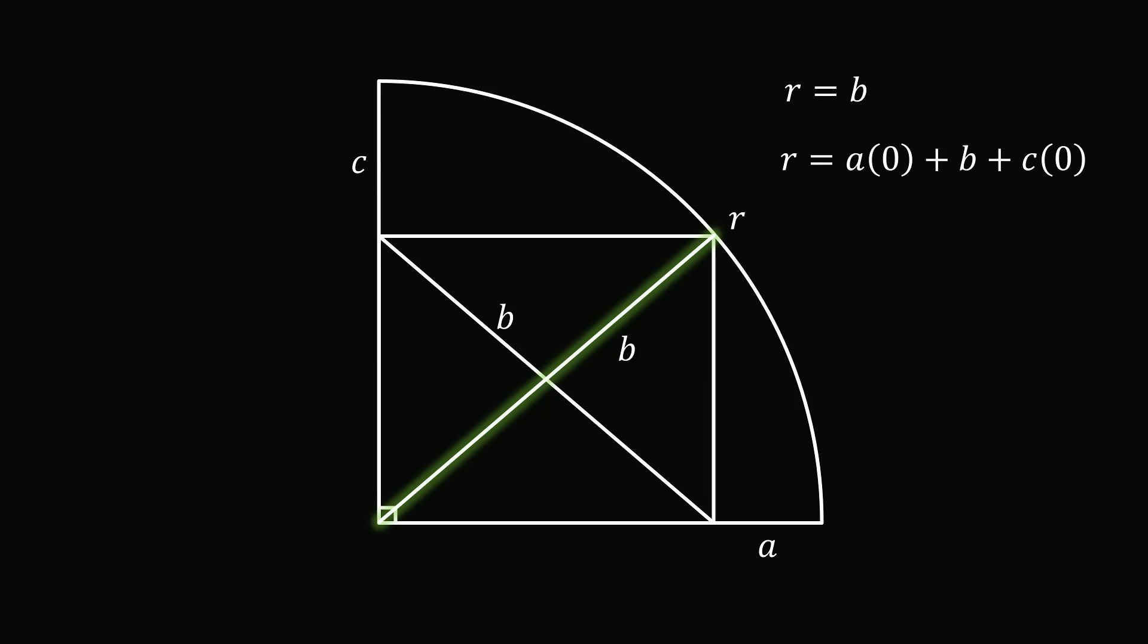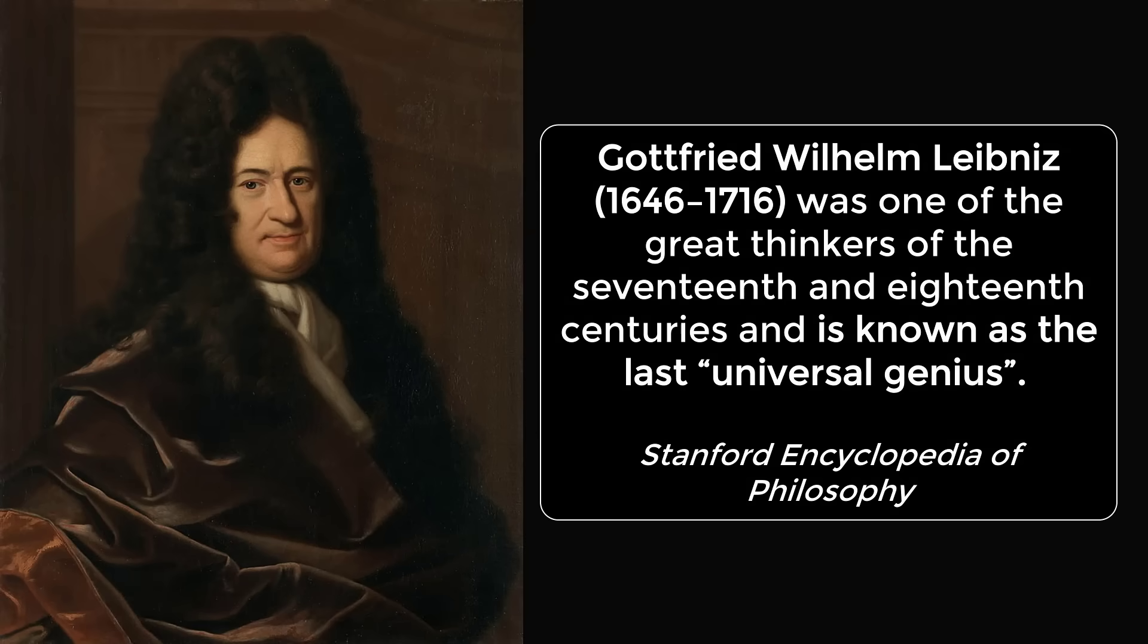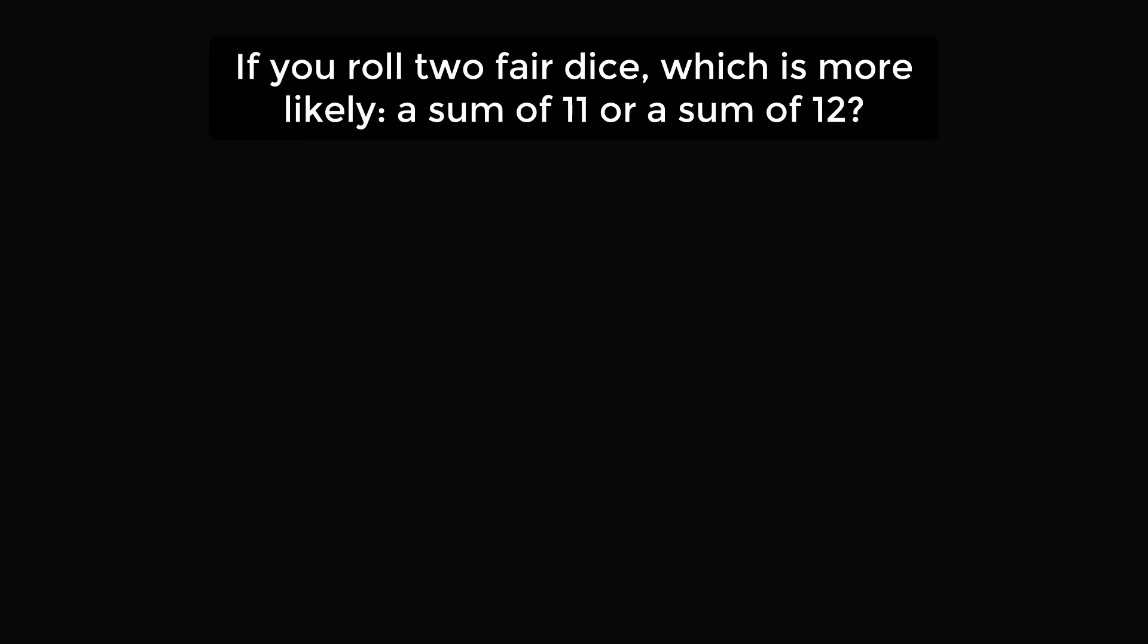But Feynman is not the only genius who has ever been fooled by a simple problem. Gottfried Wilhelm Leibniz was one of the great thinkers of the 17th and 18th centuries and is known as the last universal genius, according to the Stanford Encyclopedia of Philosophy. But even Leibniz has made a mistake in the then developing field of probability. The question is if you roll two fair dice, which is more likely, a sum of 11 or a sum of 12?